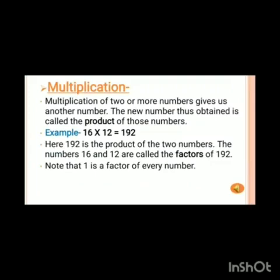Now let's move on to the next operation on numbers: multiplication. Multiplication of two or more numbers gives us another number. The new number thus obtained is called the product of those numbers. It means when we multiply two or more numbers we get their product. For example, 16 multiply 12 will give you 192. Here 192 is the product of the two numbers. The numbers 16 and 12 are called the factors of 192. Note that 1 is a factor of every number.